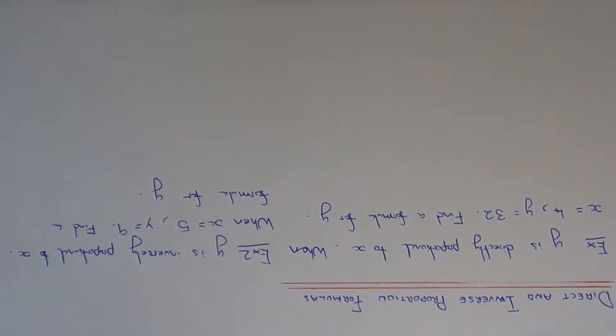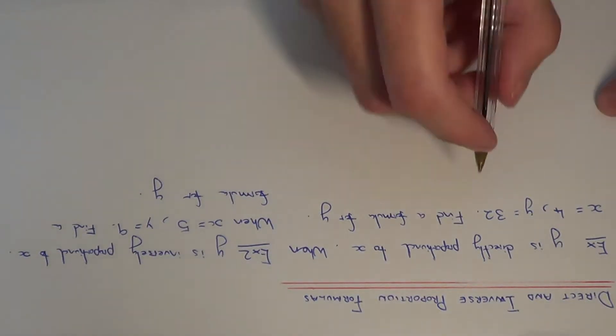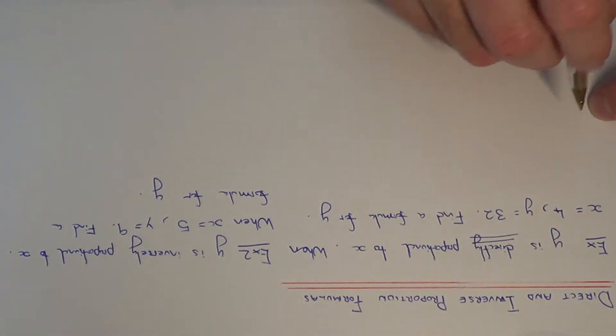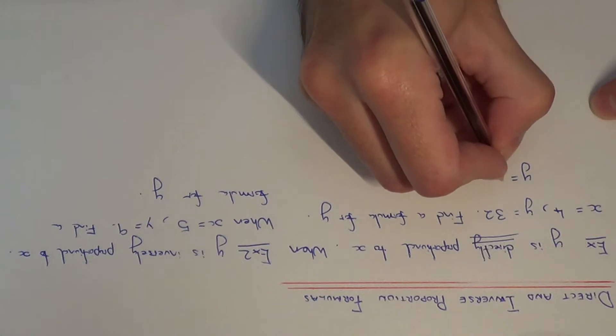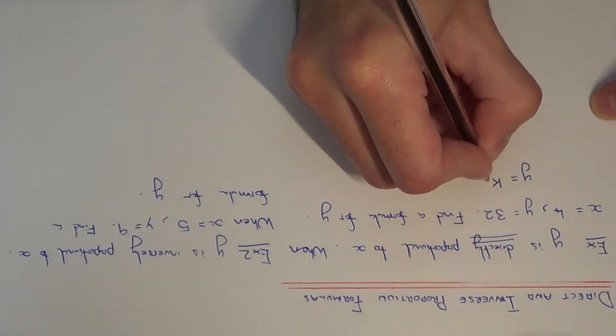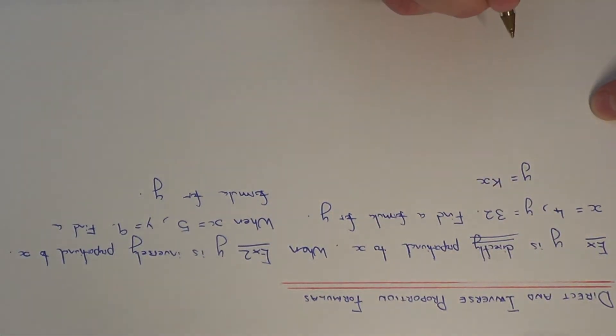y is directly proportional to x, and when x equals 4, y is equal to 32. We need to find a formula for y in terms of x. Since y is directly proportional to x, this means our formula will take the shape of y equals k multiplied by x.